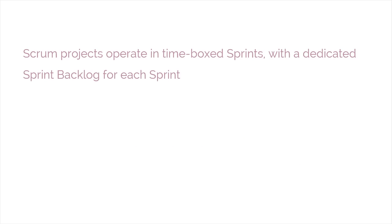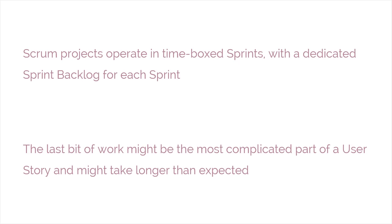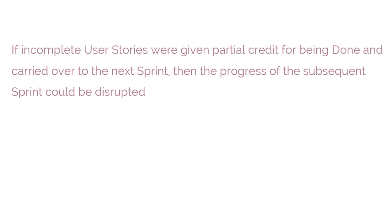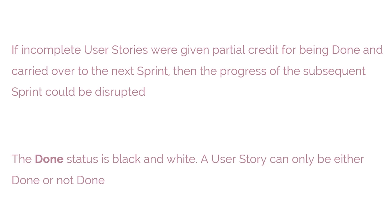Scrum projects operate in time-boxed sprints with a dedicated sprint backlog for each sprint. Often, the last bit of work might be the most complicated part of a user story and might take longer than expected. If incomplete user stories were given partial credit for being done and carried over to the next sprint, then the progress of the subsequent sprint could be disrupted. Therefore, the done status is black and white — a user story can only be either done or not done.